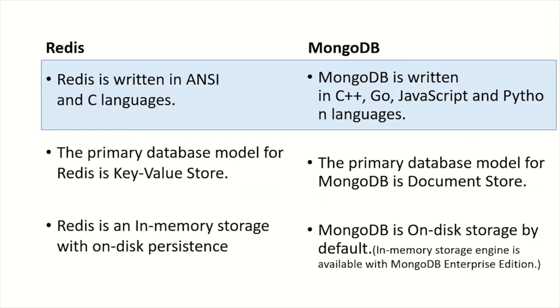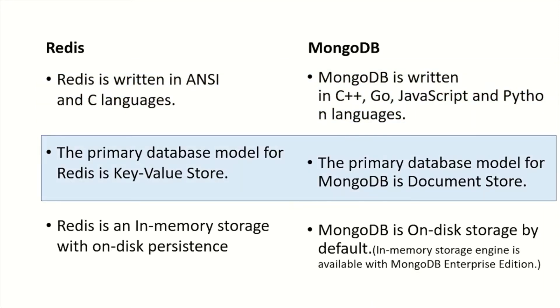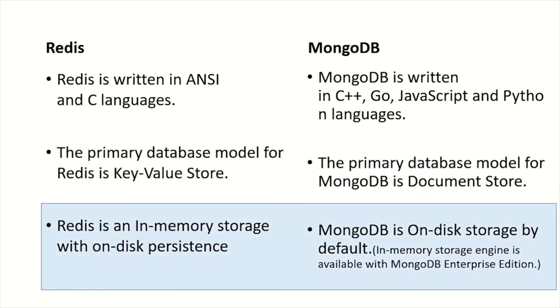The primary database model for Redis is key-value store, which is a type of NoSQL database. The primary database model for MongoDB is document store, so the data will be stored in the form of documents in MongoDB, and that is also a type of NoSQL database.